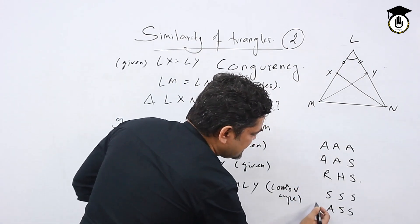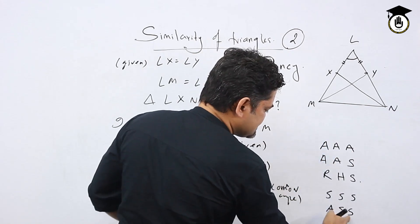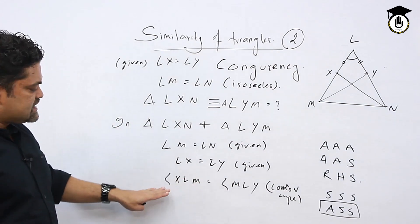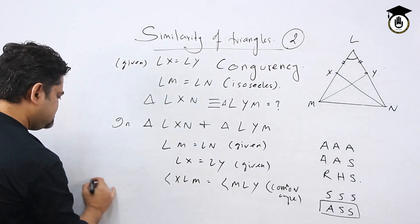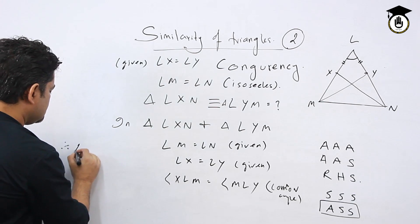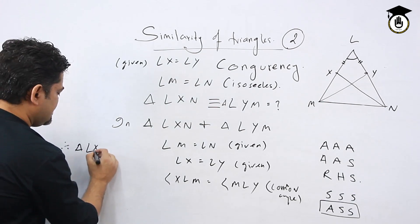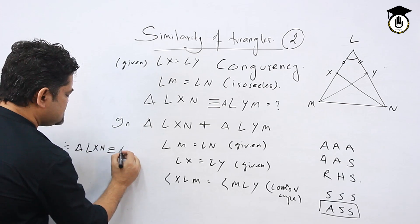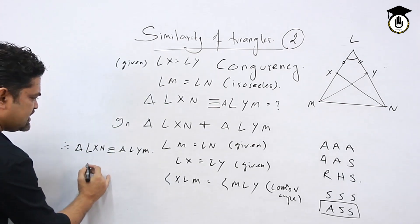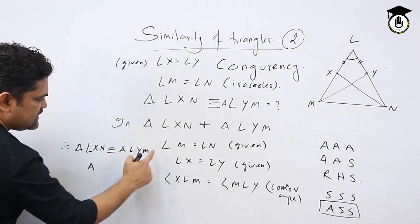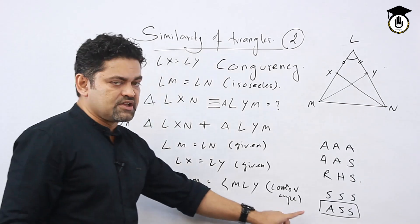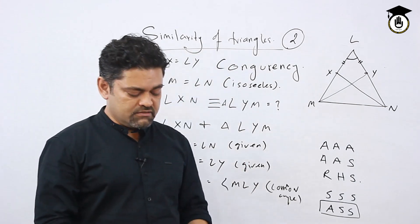So we have two sides and one angle — side-side-angle — which proves the logic. Therefore, triangle LXN is congruent to triangle LYM. The reason is side-side-angle (SSA), so these two triangles are proved congruent.